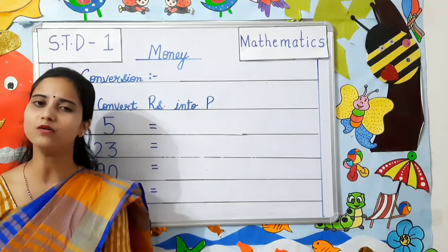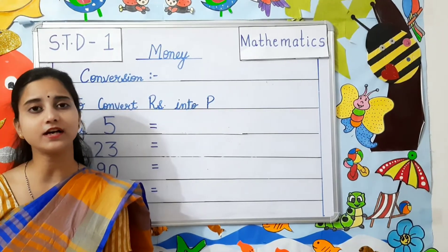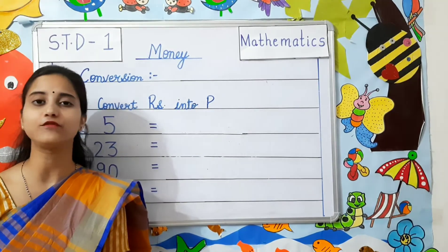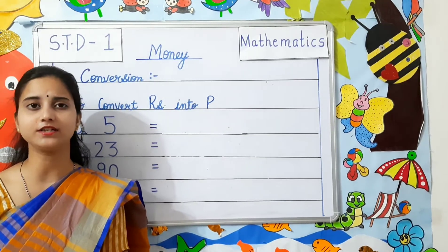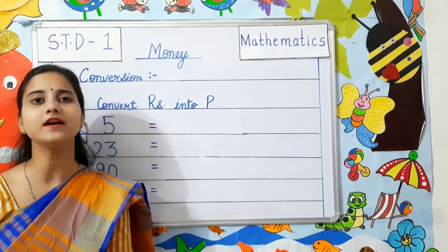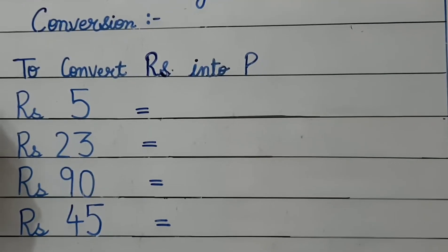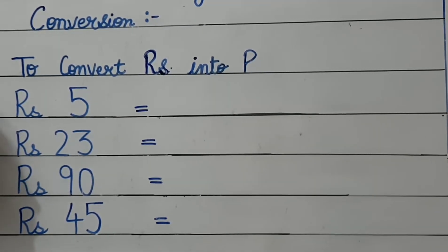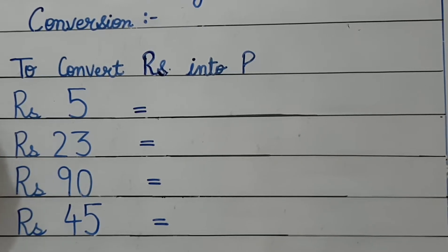Now let us learn about conversion. We can convert money from rupees to paise and from paise to rupees. When we convert rupees into paise, we multiply it by 100. To convert rupees into paise, you just need to multiply it by 100.